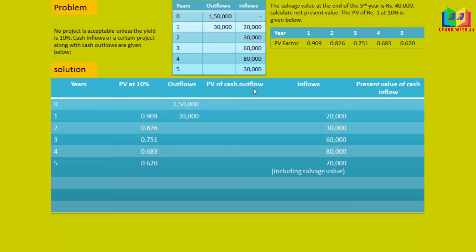Normally we do not find the PV of cash outflow because the initial investment is given at period 0, so no discounting is needed. But at the end of the 1st year, an additional 30,000 is invested, so we have to find its present value. For year 0, the 1,50,000 remains as-is under PV of cash outflow. For year 1, 30,000 multiplied by 0.909 gives 27,270, because the value of money decreases year by year.